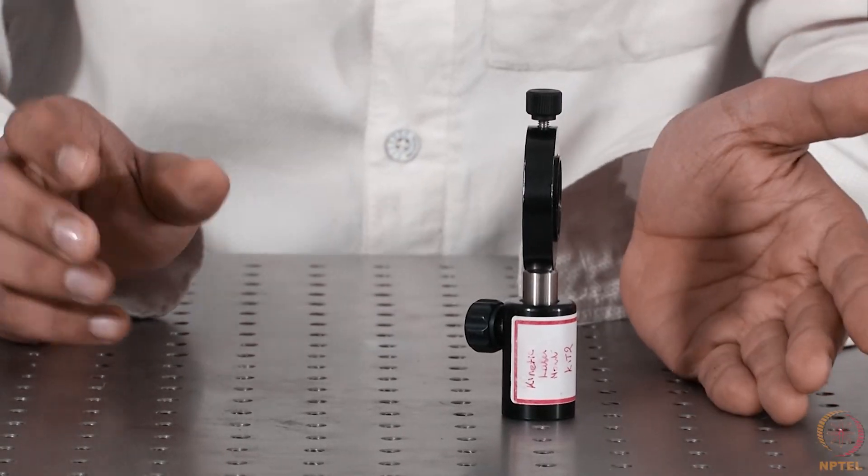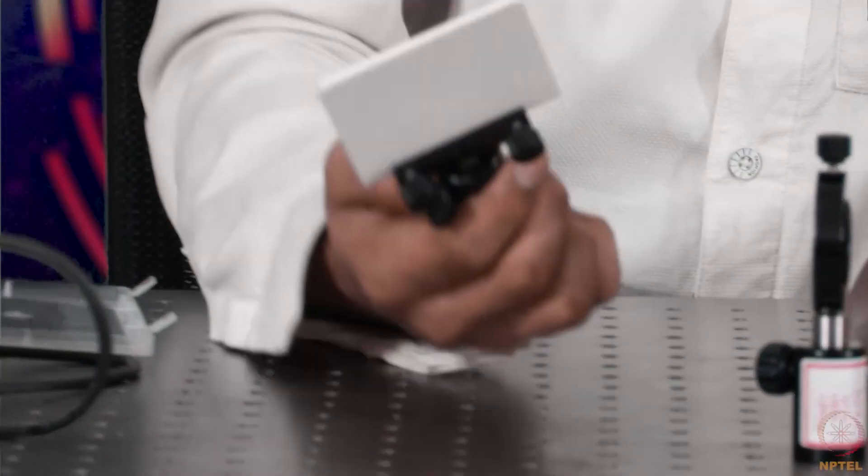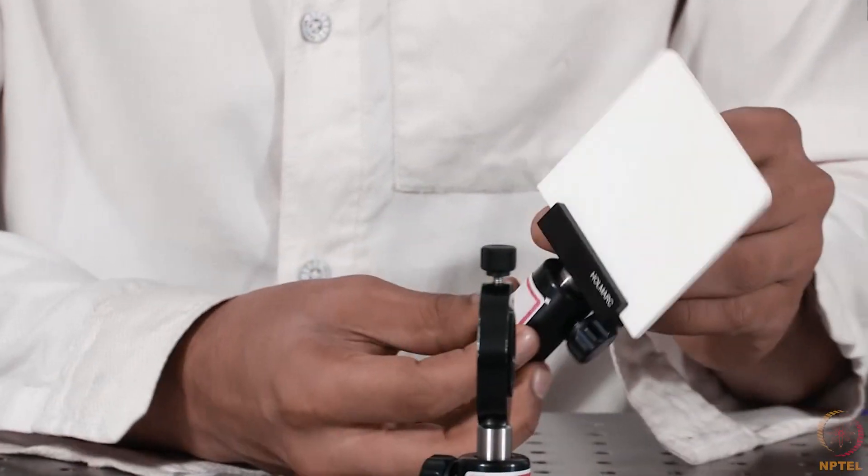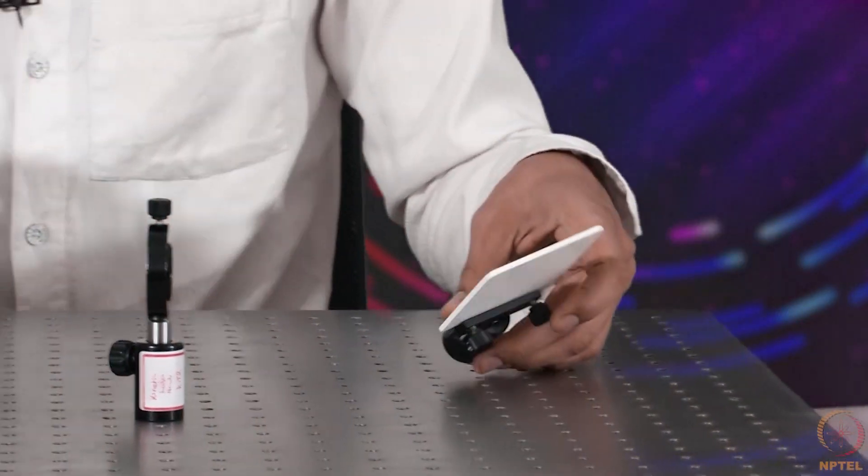This is our slit. Similarly, I have a screen to observe the interference happening. This is screen. It is on the post. And you can fix the screen anywhere on the breadboard.